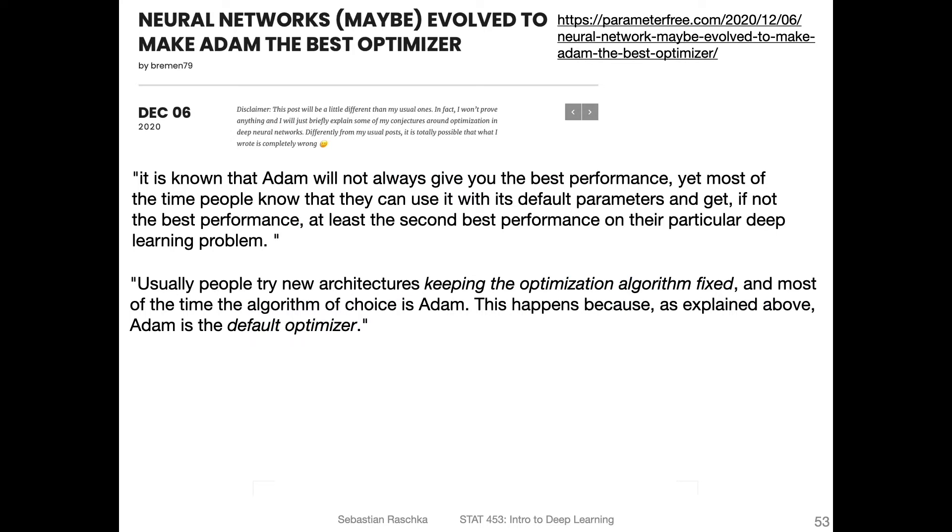Here was also an interesting take on Adam again. People often use Adam and say Adam performs just well across many different architectures. Here, this person argues this may be because architectures evolved to make Adam the best optimizer. The person says that it is known that Adam will not always give you the best performance. Yet, most of the time, people know that they can use it with its default parameters and usually you can get good performance on your problem just out of the box.